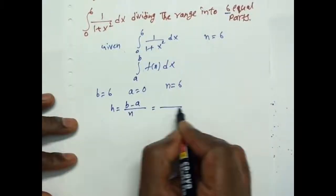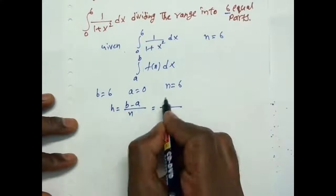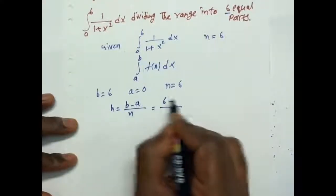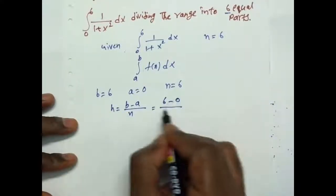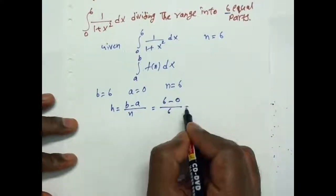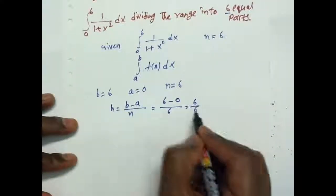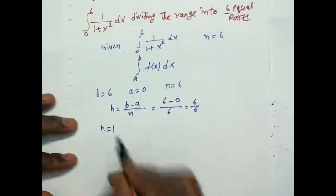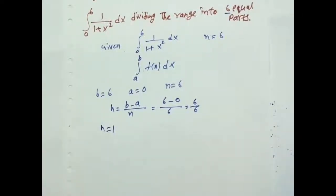That is equal to 6 minus 0 by n, where n is 6. That is 6 by 6. Therefore h is equal to 1.